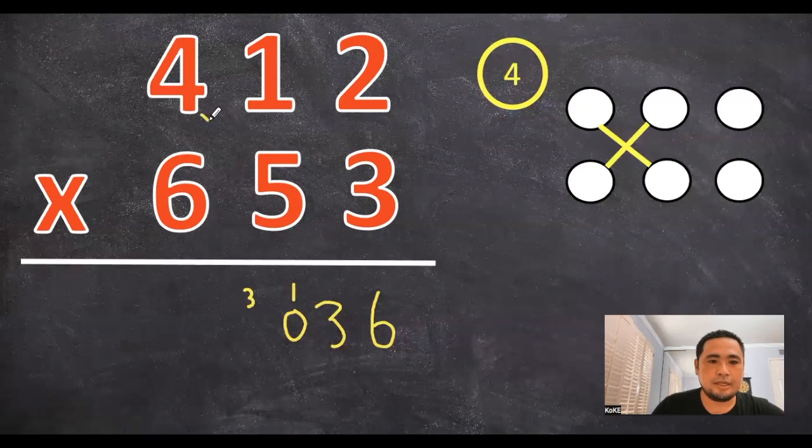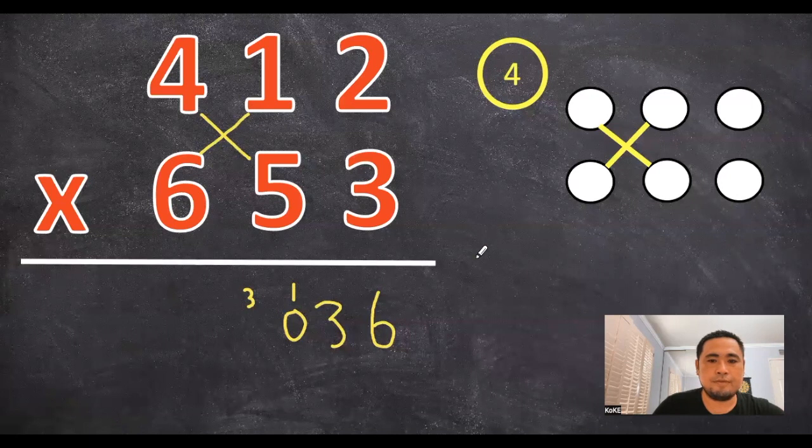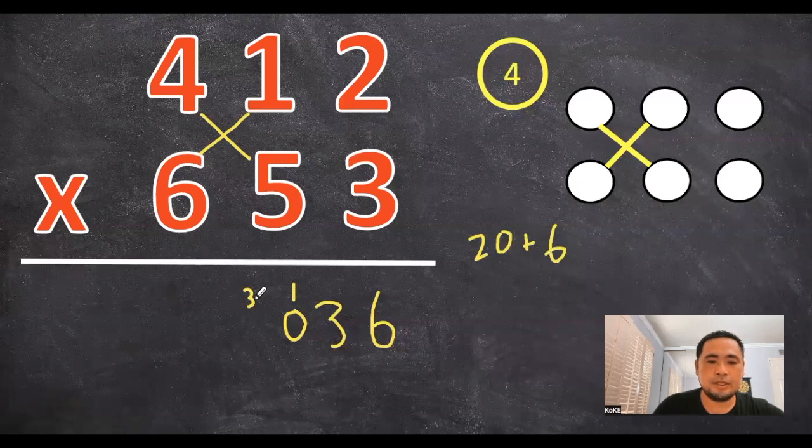The fourth set is again going to be these two cross numbers right here, so 4 times 5 is 20, plus 1 times 6 is 6, so 26 plus the 3 is 29, so I'm going to write a 9 right here, and then carry up a 2.